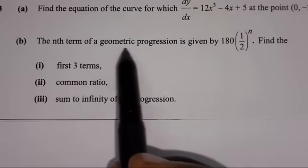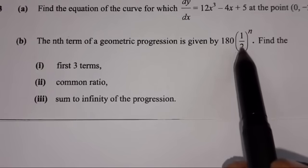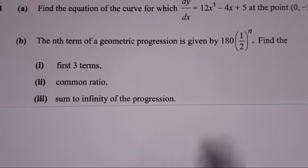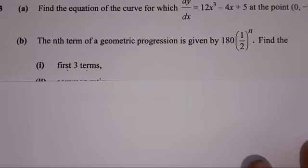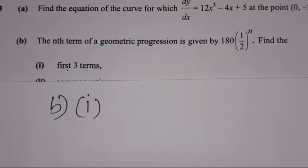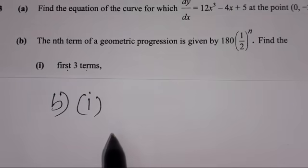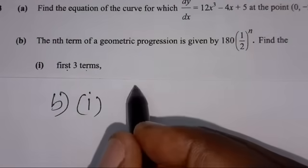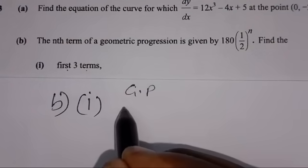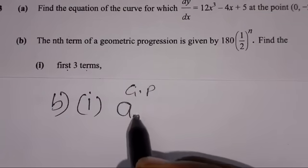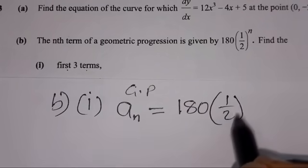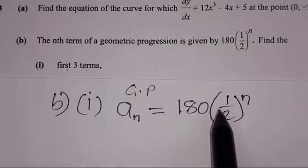Part B: the nth term of a geometric progression is given by a_n equals 180 times (1/2) to the power n. We are going to use this to find the first three terms.